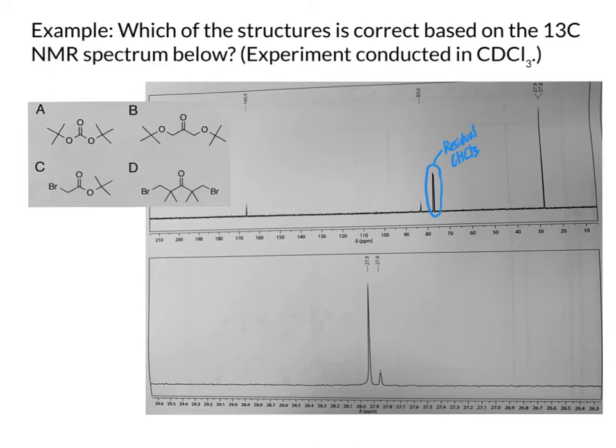That signal we can use as a reference to make sure that our spectrum is lined up correctly, that that signal does indeed appear at 77 ppm, the theoretical expected value. But we don't need to pay attention to that signal otherwise beyond that. So in looking at and trying to sort out which of these structures, A through D, will fit with the data that we have.